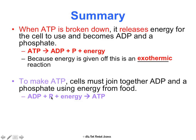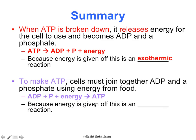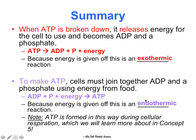Energy is being absorbed as a reactant here, so this must be an endothermic reaction. Note: ATP is formed during cellular respiration, a process that happens in your mitochondria to create usable energy for the cell. We'll talk more about this in concept five, but you need to know that the energy coming in to form ATP is happening during cellular respiration in your mitochondria.